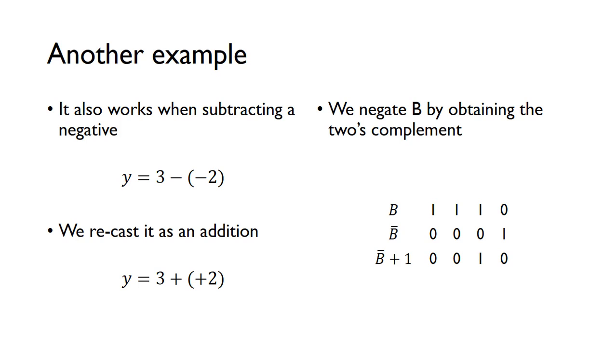So look at another example, because this method also works when we subtract a negative number. So if you want to do 3 minus minus 2, for example, again, we can just recast that as an addition. So we're just going to swap this subtraction for an addition, and to do that, we just have to swap the sign of this number. So this was a negative here, we just need to convert it into a positive, and again, we just do that by changing B into its 2's complement.